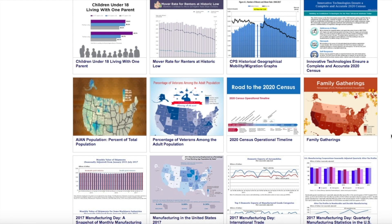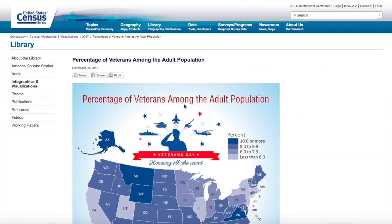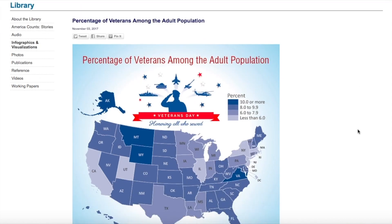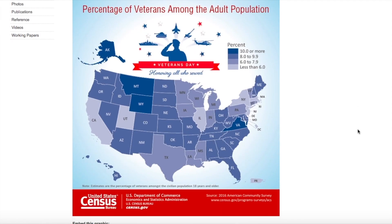For example, this month was Veterans Day. To honor our veterans, we put together a really great map showing the percentage of veterans among the adult population. Now one of the questions we get is: your visualizations are great, but they're often at the national level and I would like something at a lower geography. Well, if you look down in the lower right-hand corner, you'll see the source of the data used for the visualization.